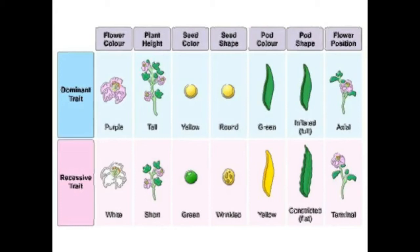In one monohybrid cross below figure 3.6, a pure breeding plant bearing terminal flowers was cross-pollinated with a pure breeding plant with axillary flowers. The resulting seeds after sowing produced all plants with axillary flowers only. When these F1 hybrid plants were self-pollinated, they produced F2 generation plants with axillary flowers and plants with terminal flowers in the ratio of 3 to 1.